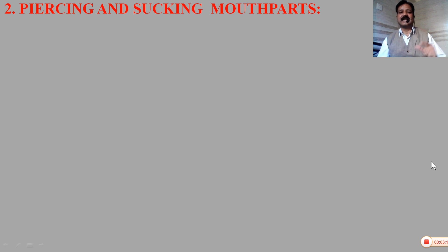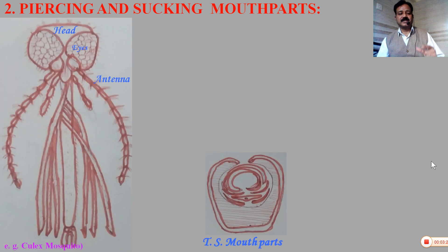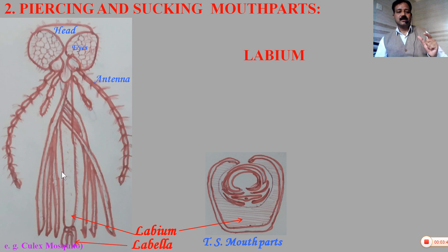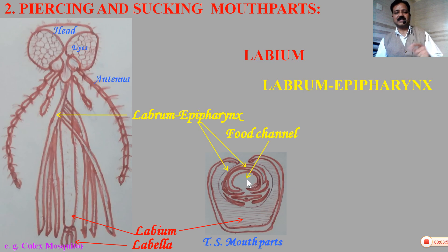The next part is the piercing and sucking mouth parts, present in case of the mosquito. For example, this is the structure of Culex mosquito — these are the modifications in the mosquito. The labium is the outer bony structure present in case of the mouth part. All these mouth parts combine together to form a channel-like structure called the proboscis, or the food channel. The labrum along with the epipharynx forms the outermost covering at the top of the proboscis.